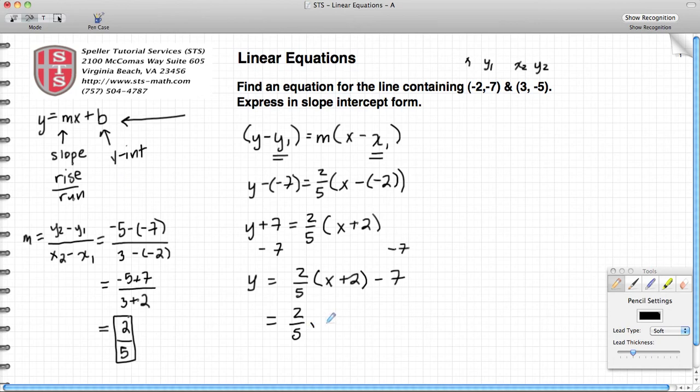Now I'm going to distribute this 2/5 to my x term and my positive 2 term. So that gives me 2/5 x plus, 2 times 2 gives me 4, and this is understood to have a denominator of 1, so 5 times 1 is 5, minus 7. Here I have two numbers, a fraction and a whole number. I need to combine those two numbers. So I have 2/5 x plus 4/5.